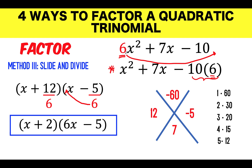The idea of slide and divide is that it's harder to factor when A is not 1, so we slide that value to C to make the coefficient of x² equal to 1. After factoring the simpler expression, we cancel the effect of that multiplication by dividing by the same number. When the quotient is an integer we keep it; when it's not an integer, we slide the divisor back to x to form a term like 6x minus 5.